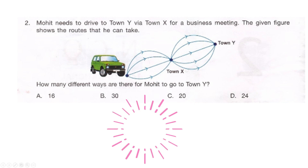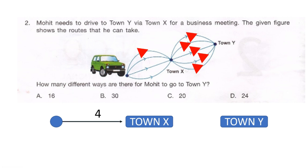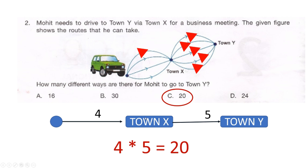Let's look at it together. For every route from the starting point to town X, there are four different routes. From town X to town Y there are five routes, and every route has five ways to reach town Y. Therefore our solution is 4 times 5, which equals 20 — option C.